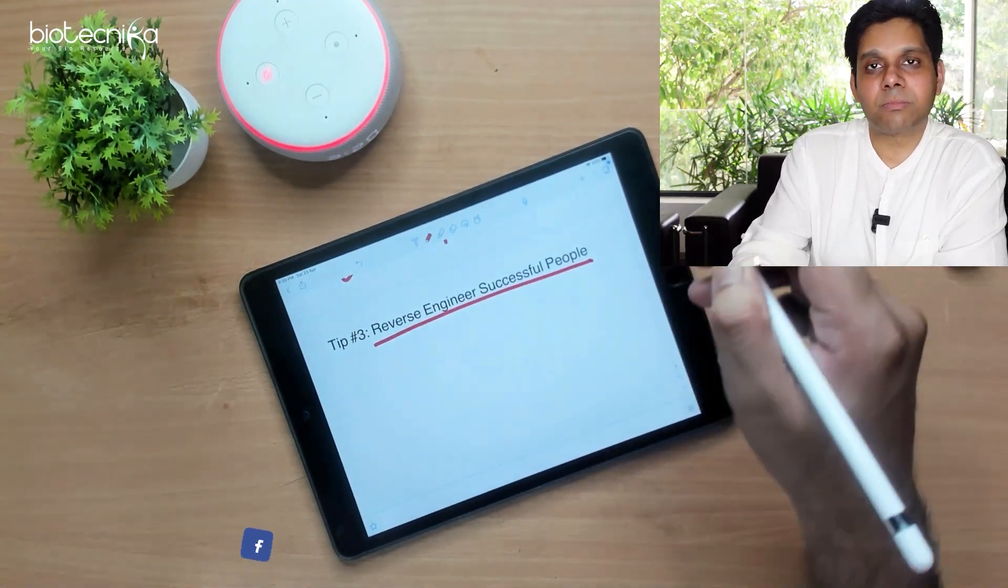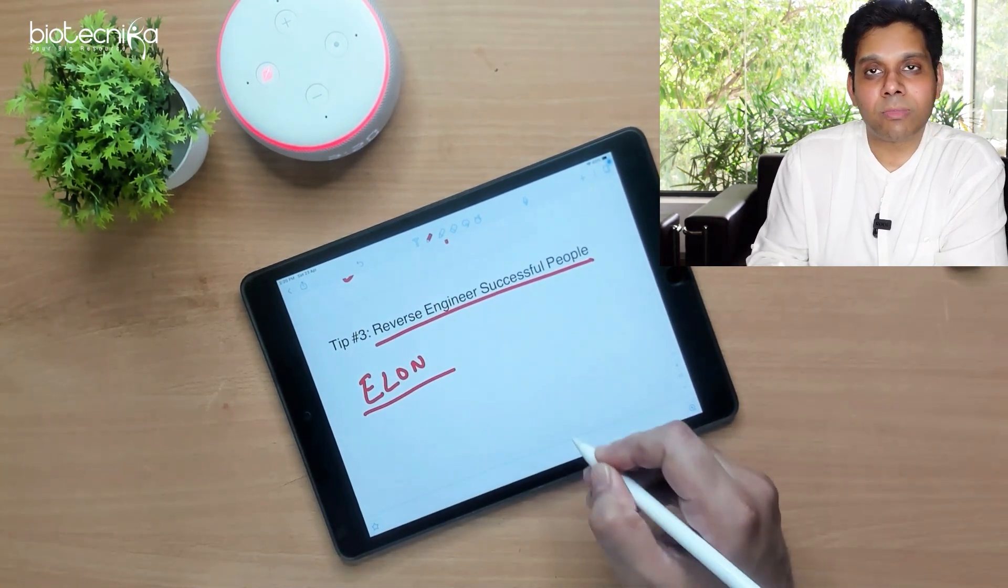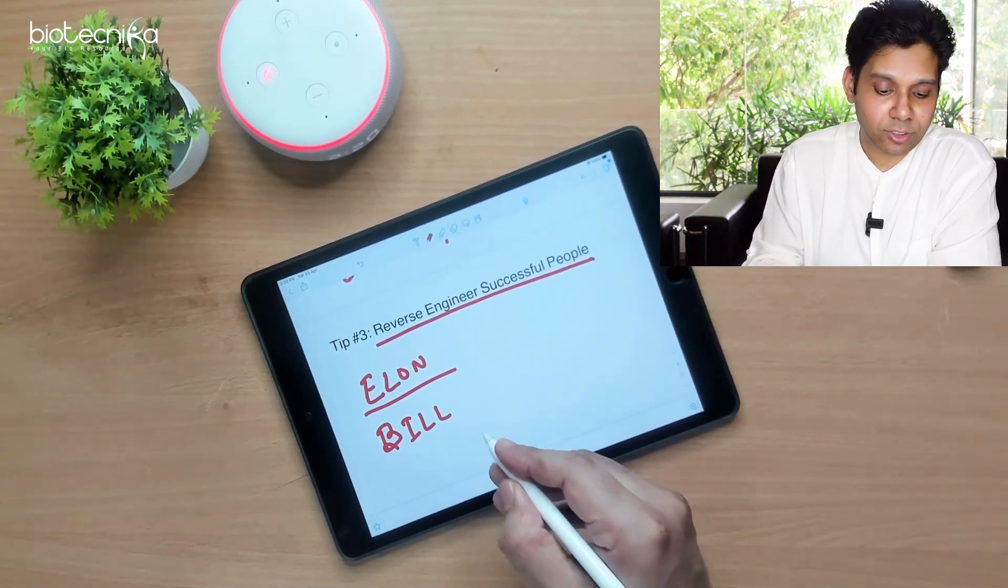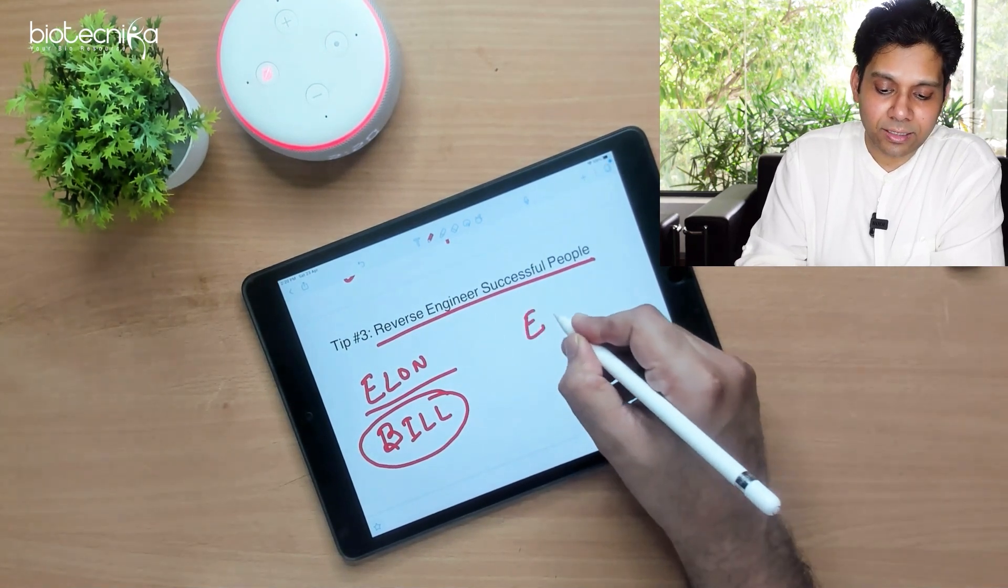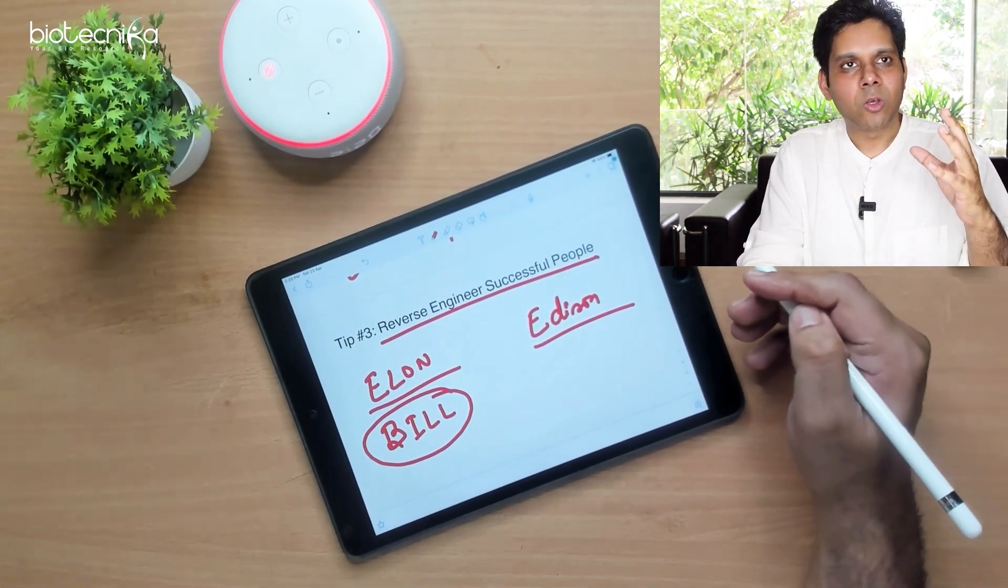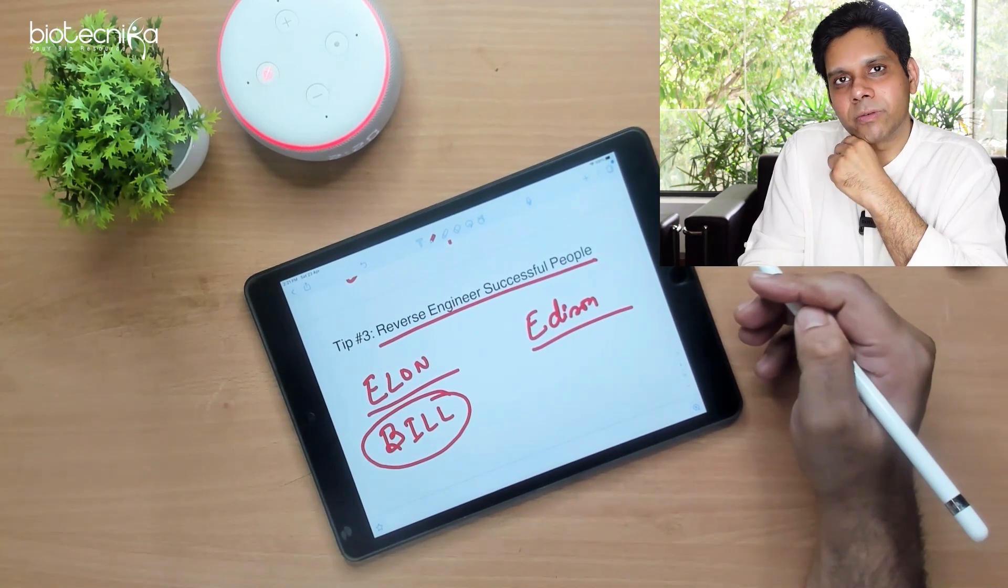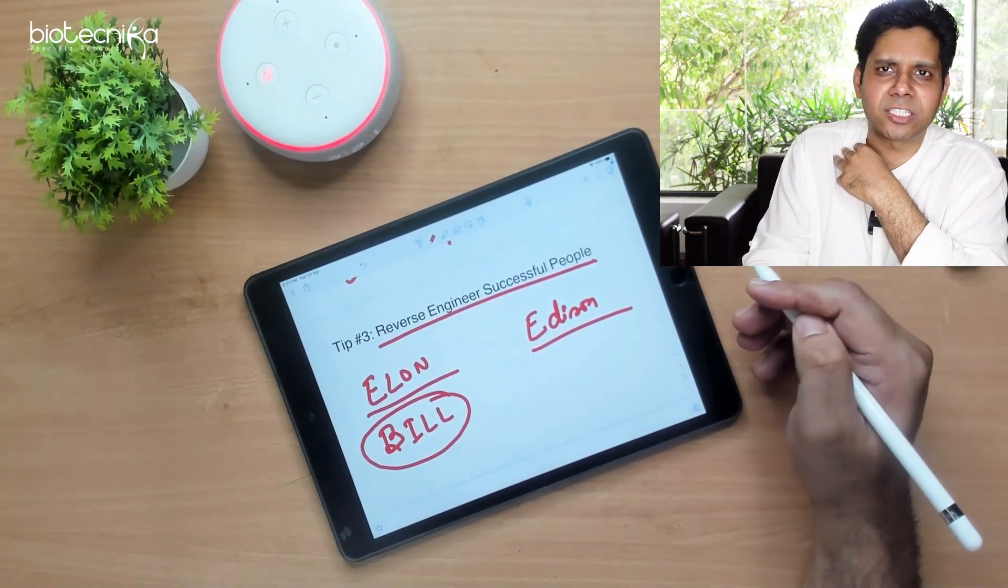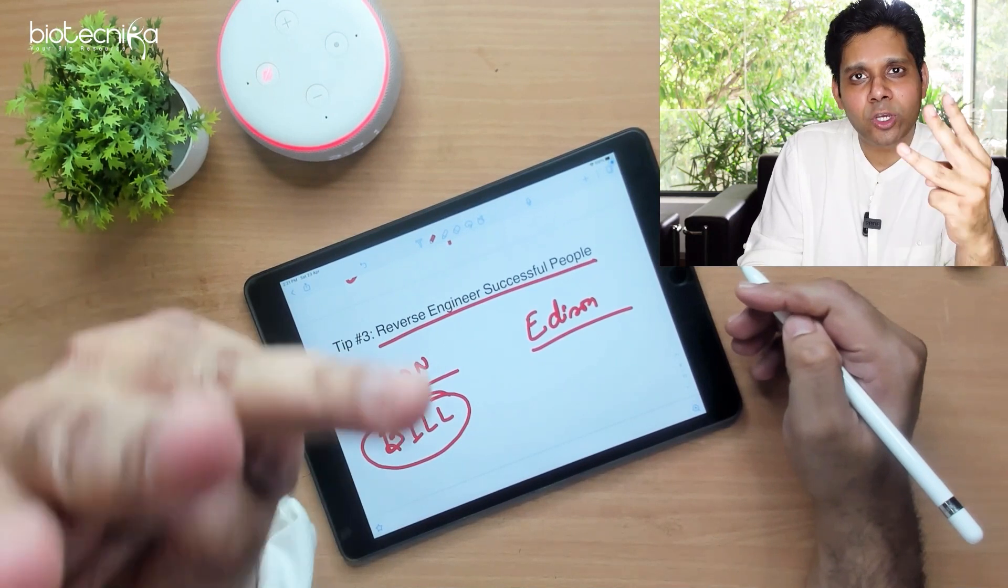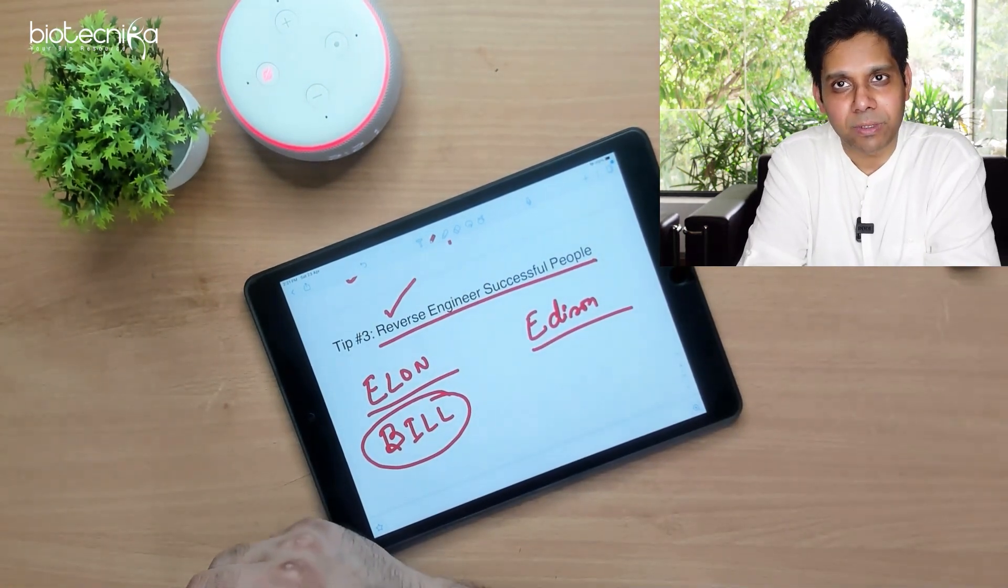Now the third, reverse engineer successful people. This is my favorite. If you want to become Elon Musk, then you will have to reverse engineer Elon Musk. If you want to become Bill Gates, then you have to reverse engineer Bill Gates. If you want to become Edison, then you have to reverse engineer him. That means, go understand, read about that person. Understand how these successful people became successful. Was it luck? No, it was not. None of the successful people will tell you that it was luck because of which they became successful. It is all about hard work. It is all about strategy. It is all about technology. If these three things come together, nobody in this world can defeat you. And that's how you become successful. Reverse engineer the successful people.